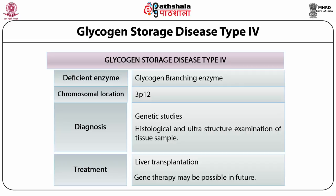Diagnosis of GSD type 4 includes genetic studies, histological and ultra-structural examination of tissue samples. Treatment generally involves liver transplantation, and gene therapy may be possible in future. Clinical manifestations are quite varied; in the classic form, affected children appear normal at birth but present by 18 months of age with failure to thrive, portal hypertension, hepatosplenomegaly and cirrhosis. Typically the disease progresses rapidly, leading to death by three to five years of age.